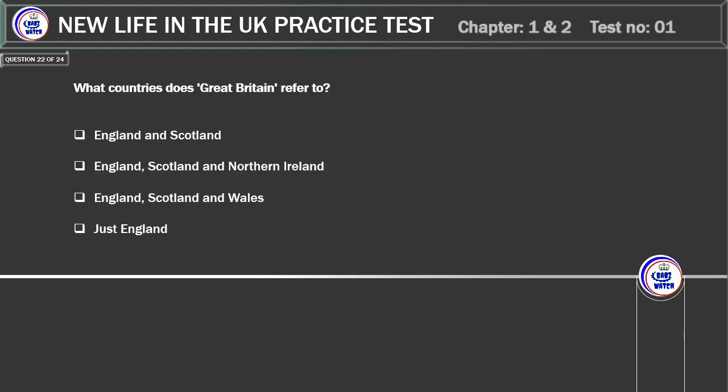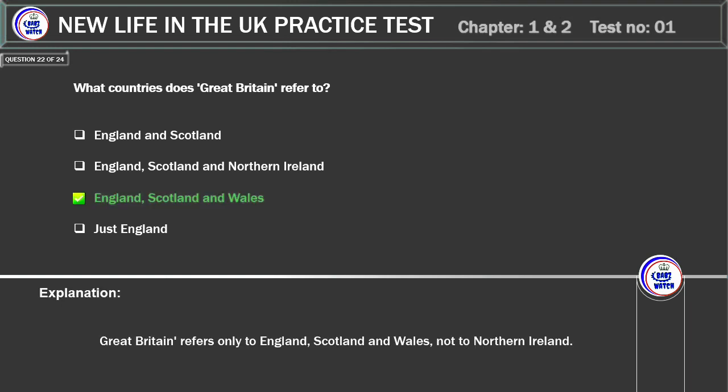What countries does Great Britain refer to? England and Scotland. England, Scotland and Northern Ireland. England, Scotland and Wales. Just England. Correct answer: England, Scotland and Wales. Explanation: Great Britain refers only to England, Scotland and Wales, not to Northern Ireland.